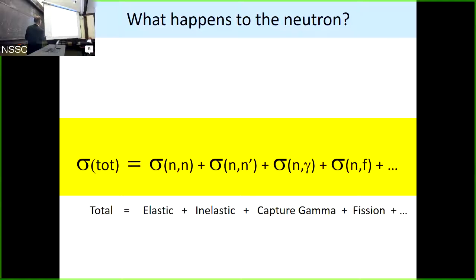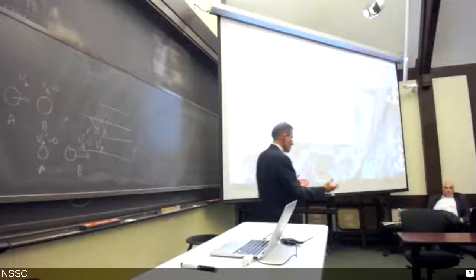Last thing here, what happens to the neutron? We'll say, well, it got taken out of the beam. How did it get taken out of the beam? Lots of things can happen. It could have elastically scattered. It could have been inelastically scattered. It could have been captured or caused fission or other things. So one can break down the total cross-section into subcategories of what happened to the neutron. And with that, we're finished.